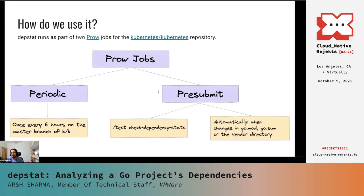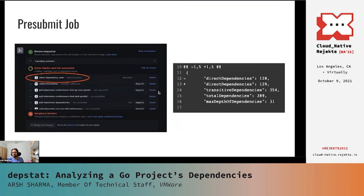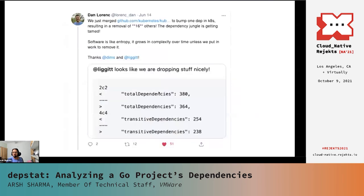What this job does is run Depstat on the code which is present in the pull request and print its difference with the output of running Depstat on the master branch of the Kubernetes repository. This way, we get to know what will change in terms of dependencies for Kubernetes if we merge that particular pull request. So if your pull request changes dependencies, Prow would catch that and run the check-dependency-stats job. For one PR, the number of direct dependencies was being changed by one, which is what Depstat reported. Here is another example of a PR where a total of 16 dependencies were removed, which is a huge number and goes a long way in improving the dependency chains of Kubernetes.